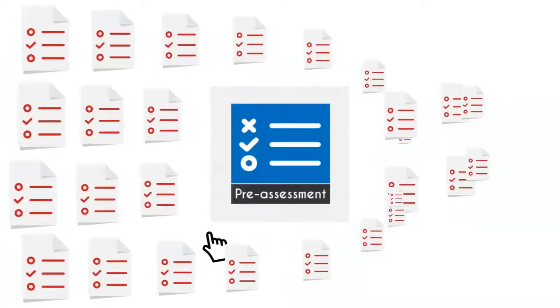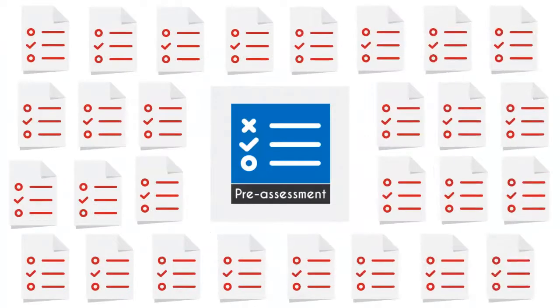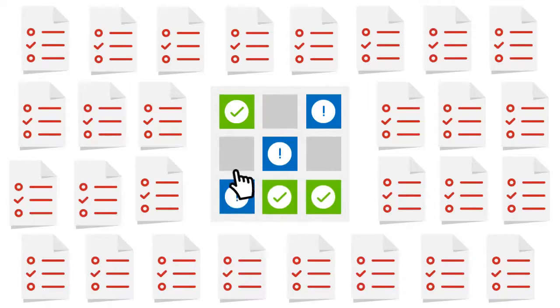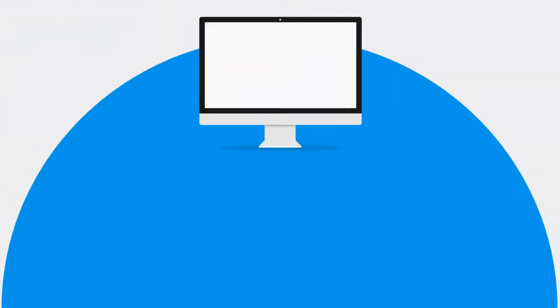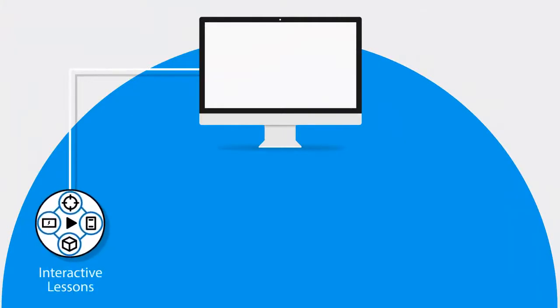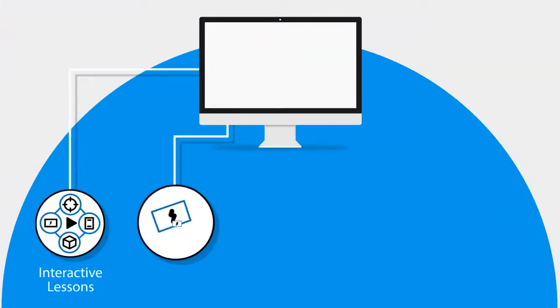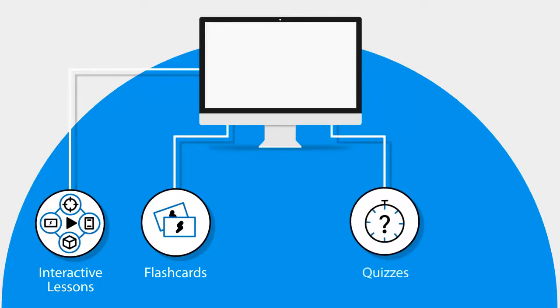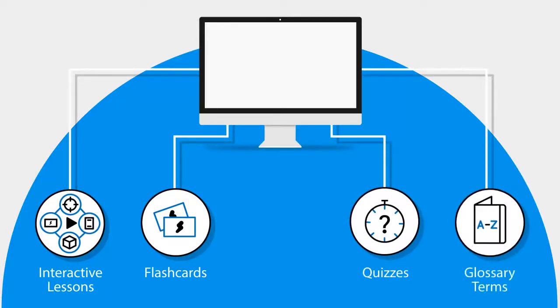In this UCertify course, you will receive 40 pre-assessment questions that will help you identify areas for improvement before you begin the course. It consists of 13 interactive lessons and learning resources with 170 flashcards, 125 quizzes, and 170 glossary terms.